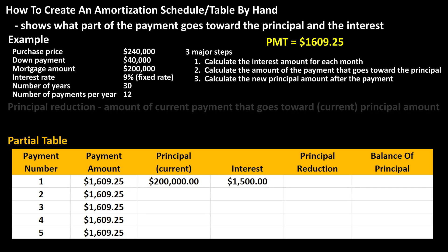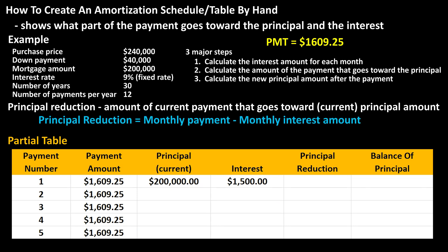The fifth column — principal reduction — is the amount of the current payment that will go towards the principal. The formula is: principal reduction equals the monthly payment minus the interest amount for the month. So we have $1,609.25 minus $1,500, which equals $109.25, and we can put that in the table.